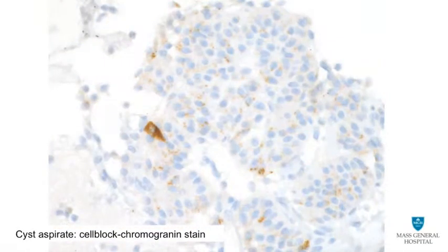Chromogranin A is a more specific marker for neuroendocrine differentiation, but as illustrated here, staining is not as robust as with synaptophysin, and with small tissue samples, there is a risk of a false negative interpretation if this is the only stain used for confirmation of a neuroendocrine tumor.